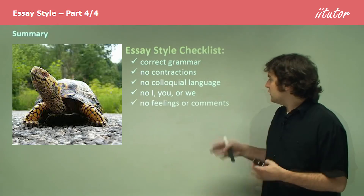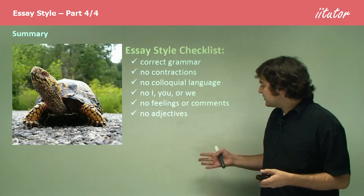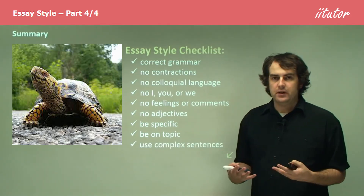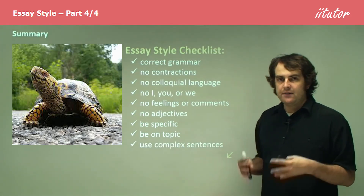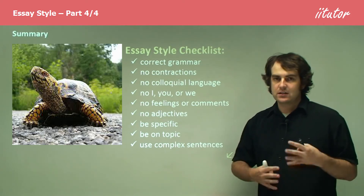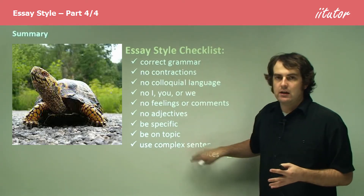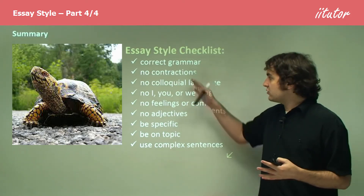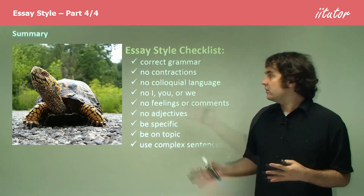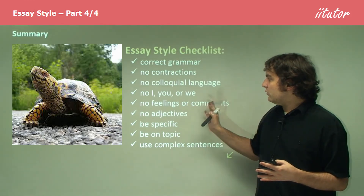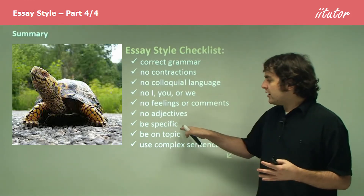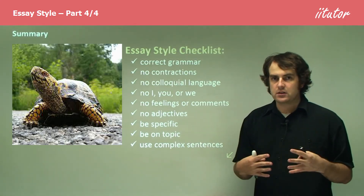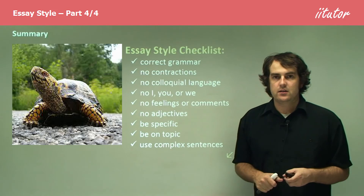No I, you, or we. No feelings or comments, no adjectives. You need to be specific, you need to be on topic, and you need to use complex sentences. Have that written down somewhere at your desk or study room at home, and check it every time you write an essay for any test. Make sure you know what all these things mean, so you know exactly how to get rid of colloquial language, how to be specific, and what to look for. If you're writing something and you're not 100% sure, go through that list and it will help you a lot.